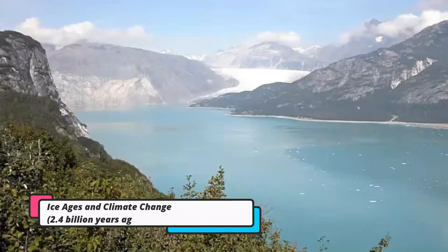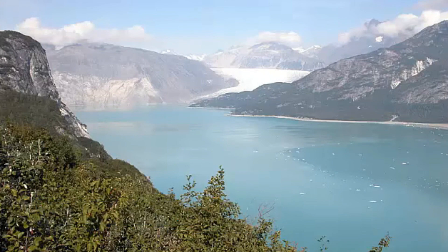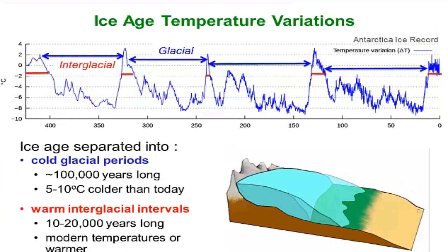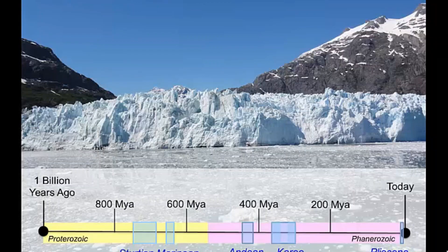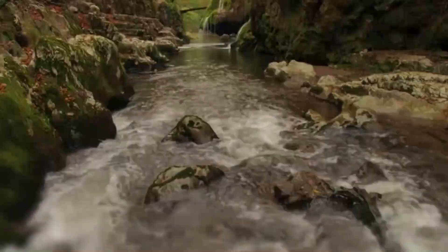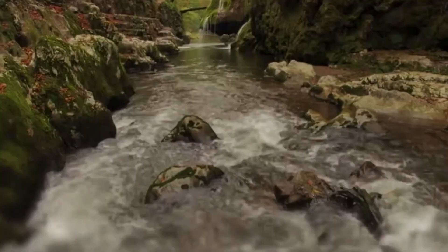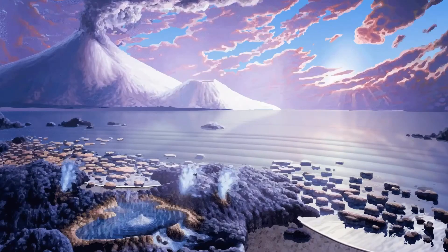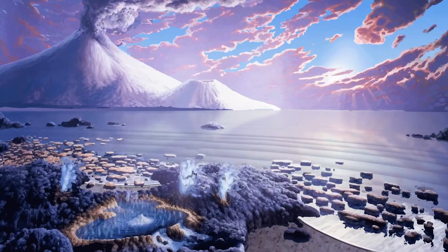Ice ages and climate change, 2.4 billion years ago to present. Ice ages swept across the planet, cloaking vast expanses in frozen splendor. These climatic oscillations left an indelible mark on Earth's tapestry, influencing the evolution and distribution of life in profound ways.